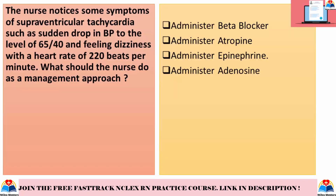The nurse notices symptoms of supraventricular tachycardia: a sudden drop in BP to 65/40, dizziness, and a heart rate of 220 beats per minute. What should the nurse do as a management approach? Options: administer beta blocker, administer atropine, administer epinephrine, administer adenosine.